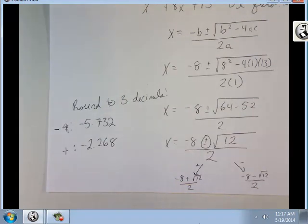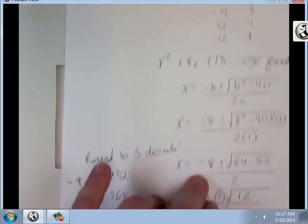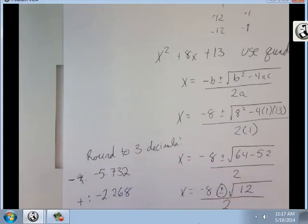It's just around the 3 decimals. And that's really all there is to factor. All right. Just follow the same process as you always do. Just look out for these exceptions. All right. And that's it for these lessons. Thank you, and I'll see you later.